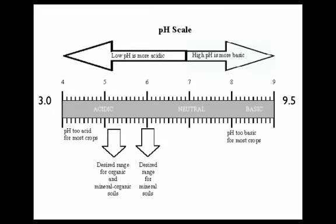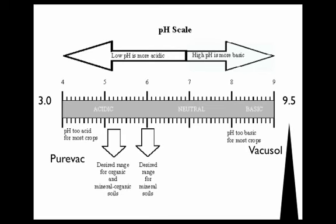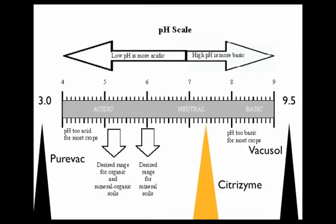Let's take a look where these three products sit on the pH scale. We can see that VacuSalt is on the alkaline side of the scale at 9.5, and we can see that PureVac is at 3.0 or the acidic side of the scale, while Citrizyme at 7.4 sits very close to neutral.